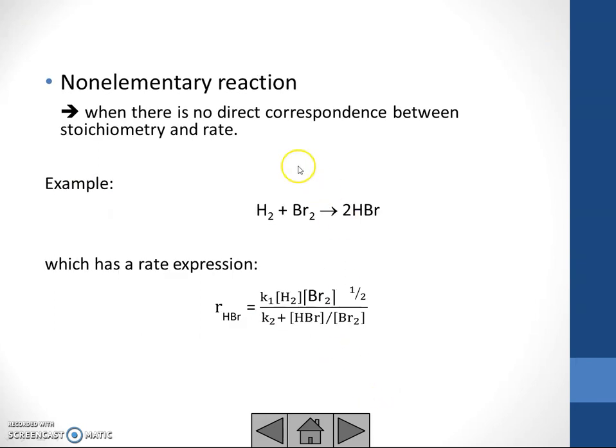This is non-elementary reaction when there is no direct correspondence between stoichiometry and rate. As you can see, example here, we have 1 hydrogen plus 1 bromine but producing 2 product of hydrogen bromine, which has a rate expression like this.